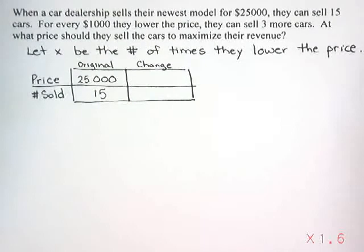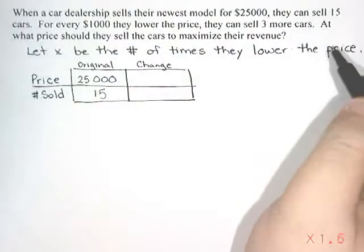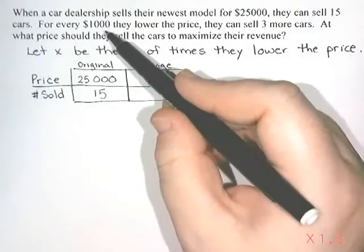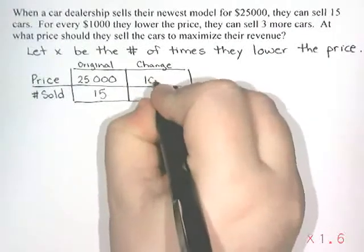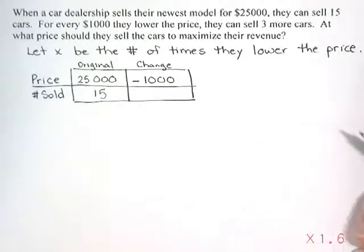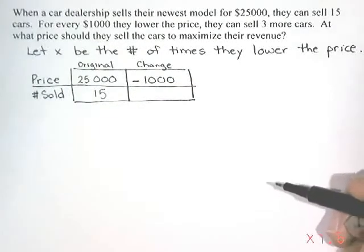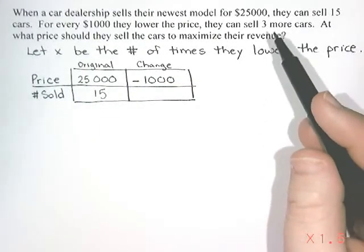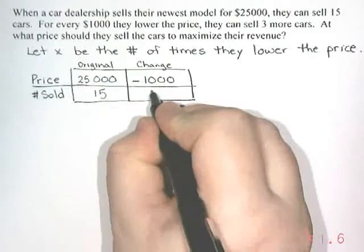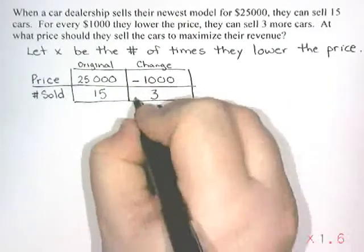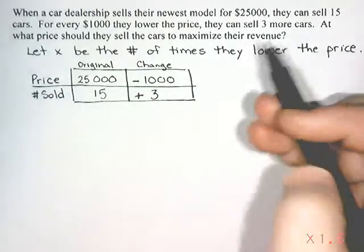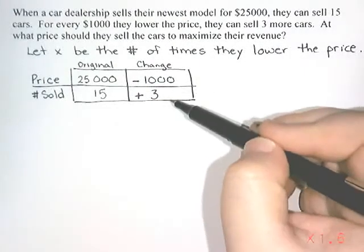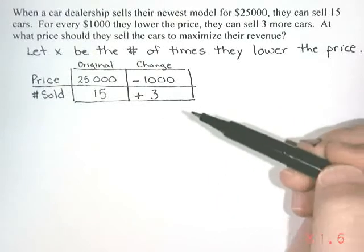They don't want to leave it that way — they want to make a change. Their change is that they're going to lower the price by $1,000. So next to the change, I'm going to put $1,000 with a minus sign because they're lowering the price. And they know they can sell three more cars, so the number sold is going to go up by three — I'm going to put a plus to show it's going up by three. Now the price is going down and the number is going up, but I don't know how many times they're going to do it.